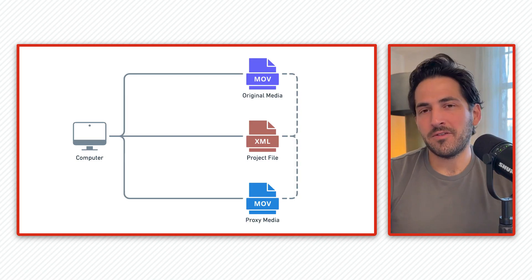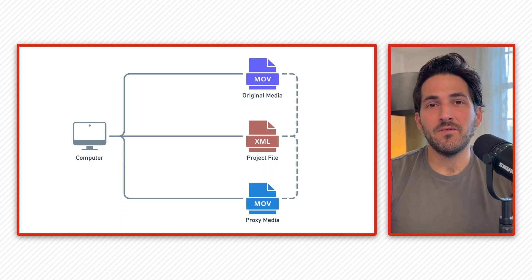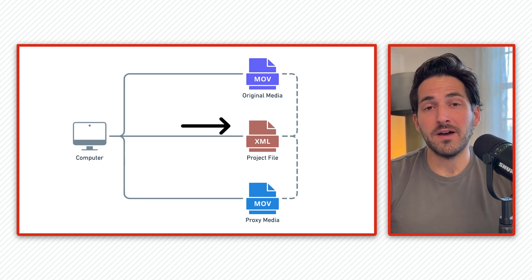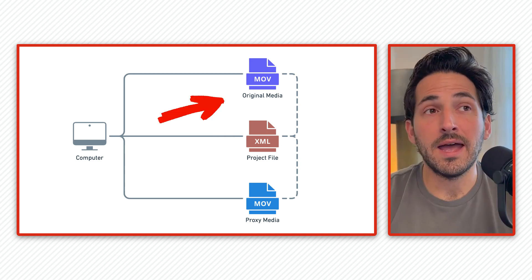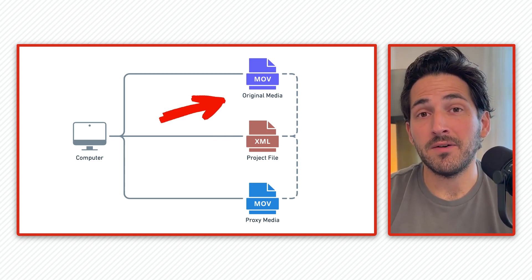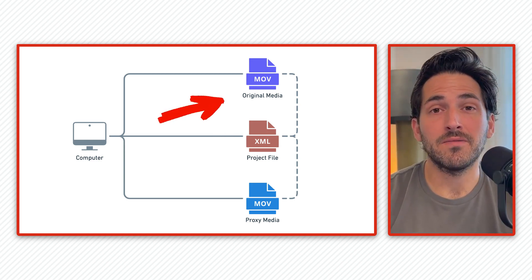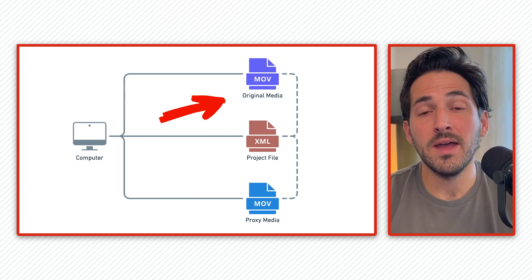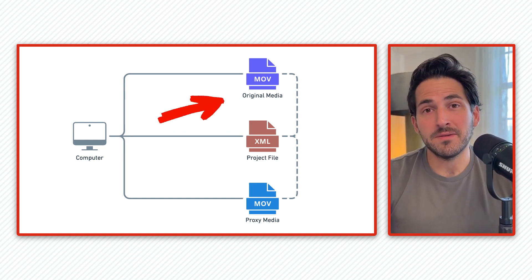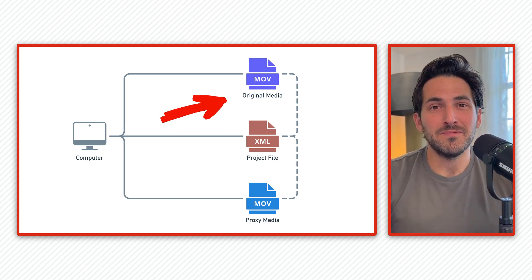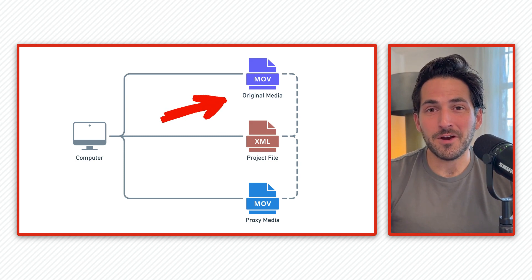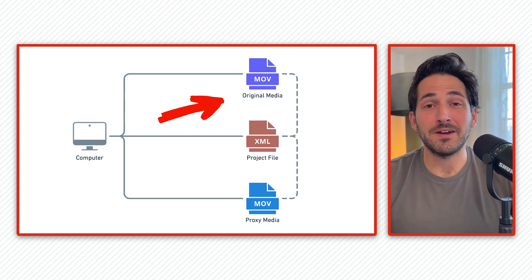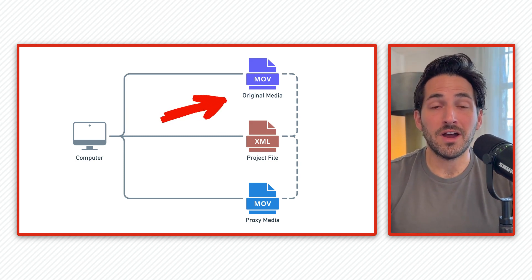If we look at what our actual media consists of with editing, usually we've got our project files — our Premiere project file, Final Cut library — and then we have our actual media files that we're recording on our camera. These files can be big. They can be gigabytes on the small end, but they can also total terabytes of files depending on how big your project is.